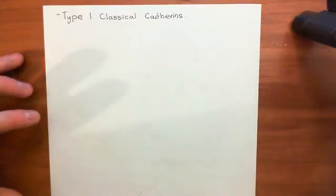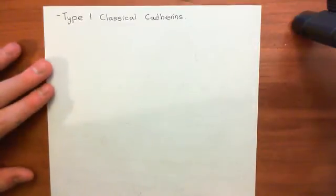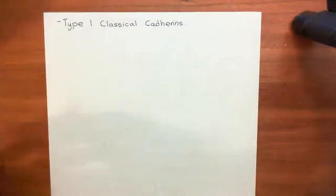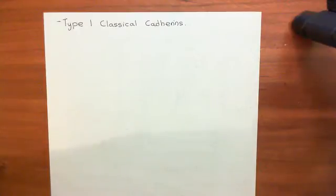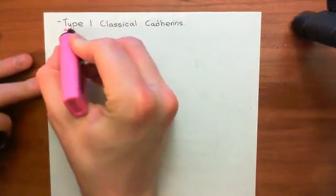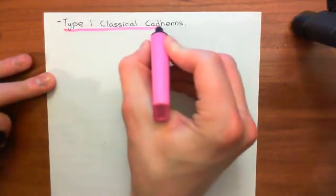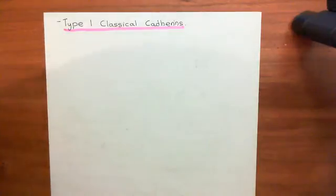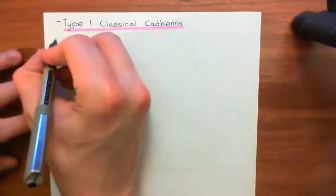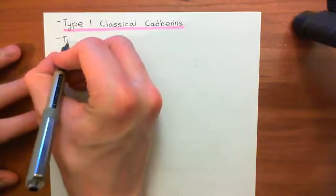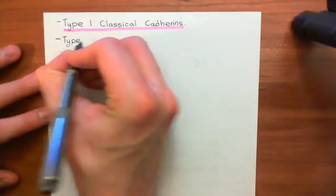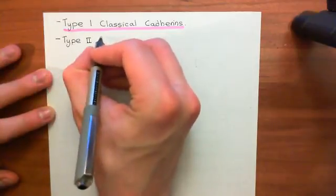If you've heard of catherines before, the ones you've heard of are probably type 1 classical catherines. The famous one that everyone can remember the name of is E-catherin, and E-catherin was the first ever catherin to be discovered. It is a type 1 classical catherin. The second family of catherines is the type 2 atypical catherines.